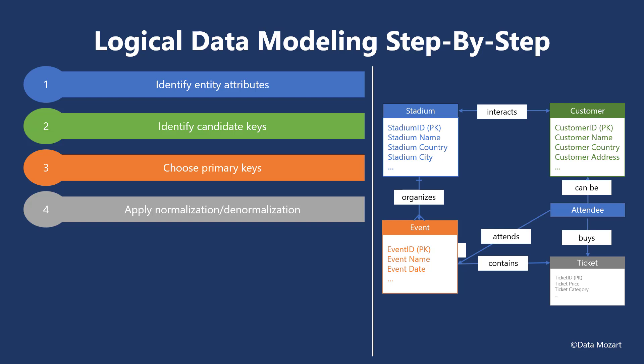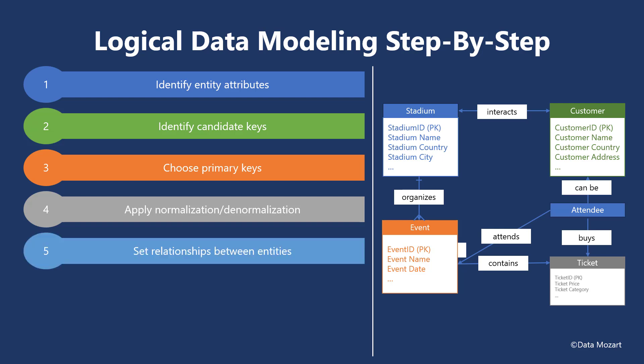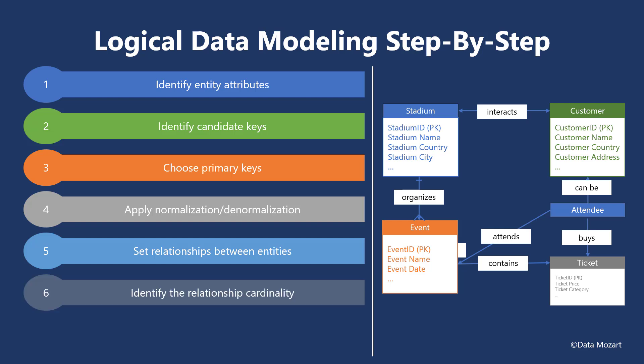Set relationships between entities: validate how various entities interconnect and, if needed, reduce the complexity of multiple relationship dependencies by breaking down one entity into multiple entities. Then identify the relationship cardinality — another extremely important step. Relationship cardinality defines how many instances of one entity are related to instances of another entity.